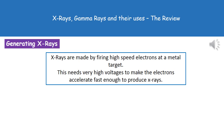To generate x-rays, we need to fire high-speed electrons at a metal target. In order to make the electrons accelerate fast enough to produce x-rays, we need a very high voltage. So the key thing is that high-speed electrons are fired at a metal target, and as a result of that, the x-ray is generated.